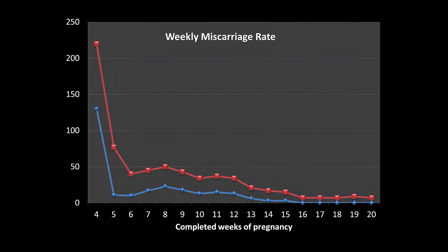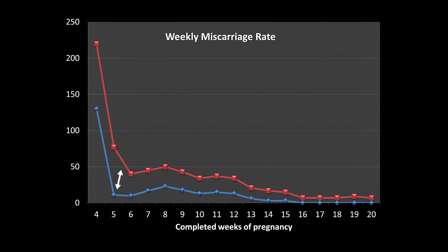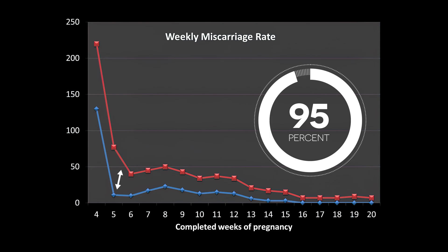Given all of these limitations, I am going to give you what I feel are the most reliable numbers that we have. I put these in a graph to make the numbers easy to understand. You'll notice that there are two lines. Because of all the different factors which influence miscarriage risk, there is a range of risk for any given week. The red line is the estimate of the higher risk and the blue line is the estimate of the lower risk. The area between these lines would identify the weekly miscarriage rate for 95% of pregnant people.